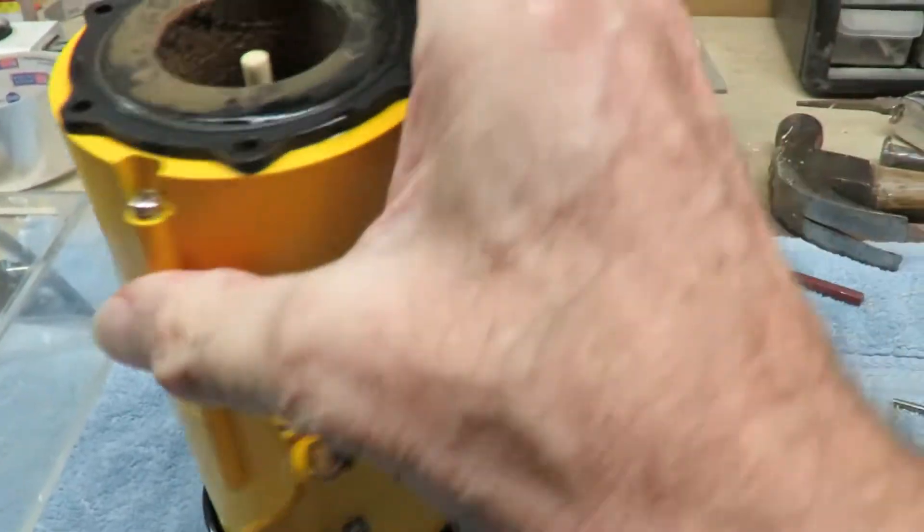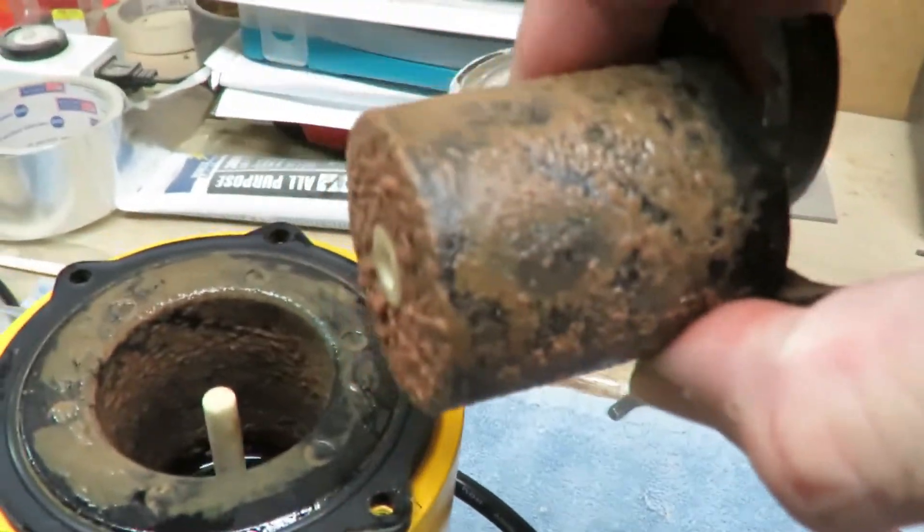They're excellent pumps. I'm moving about 1500 gallons an hour through them. Here is the large magnet that goes inside. See all the gunk on it? That's why the pump slowed down. You take that out, clean it up with a brush, and clean everything up on this end.